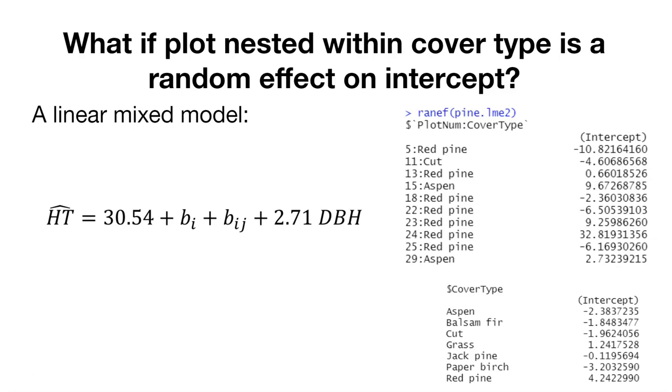Now we've got that other variable. We have an understanding of what plot each measurement was taken on. Here we can nest the plot within the cover type and call that the random effect. We can specify that random effect on the intercept.